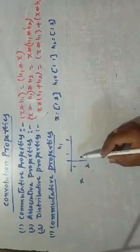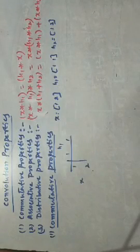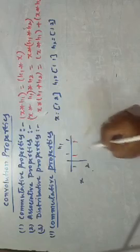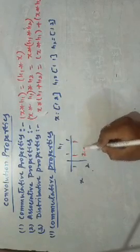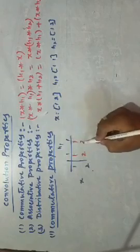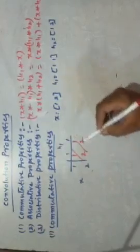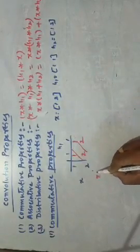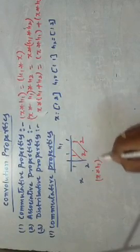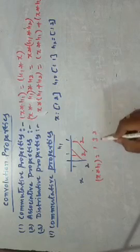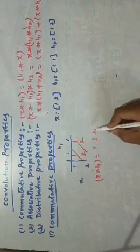The solution in matrix form: 1 multiplied with 1 is 1, 2 into 1 is 2, 2 into 1 is 2. Then diagonally, you mark the values. X convolution of H1 results in 1, 3, 2.